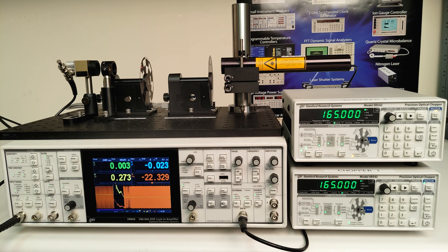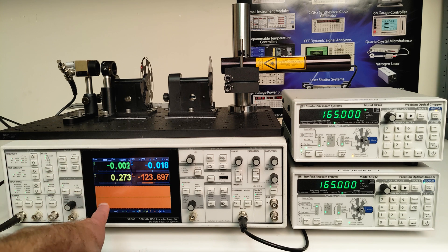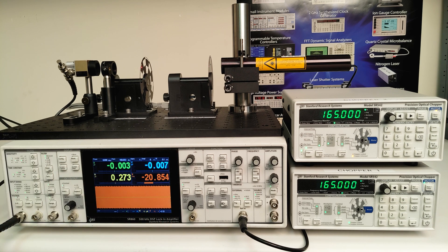I find it most useful to monitor X, Y, R, and theta on the lock-in front panel. In particular, R and theta will be used for the phase alignment procedure that follows. I also show R and theta on the strip chart history on the bottom.